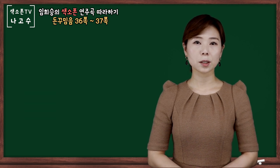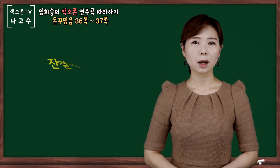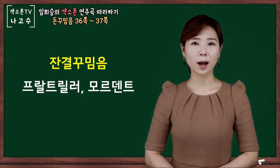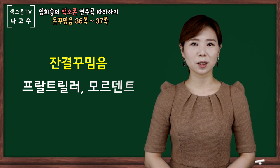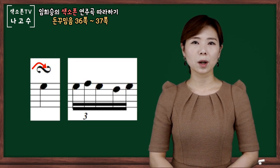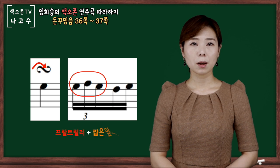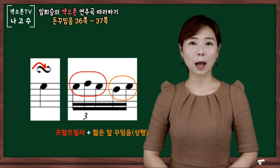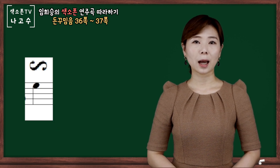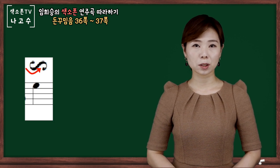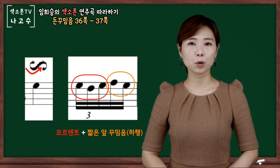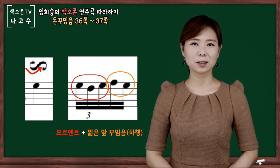이렇게 두 가지 돈 꾸밈음의 형태는 앞서 배운 잔결 꾸밈음 프랄트릴러와 모르덴트와 연관지어서 설명을 드릴 수 있겠습니다. S자의 그림이 위로 먼저 올라간다면 프랄트릴러 플러스 단음 짧은 앞 꾸밈음의 혼합 형태가 되겠고, S자의 모양이 아래로 먼저 그려진다면 모르덴트 플러스 반음 짧은 앞 꾸밈음의 혼합 형태가 되겠습니다.